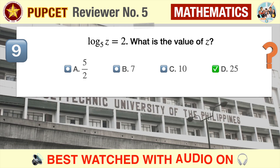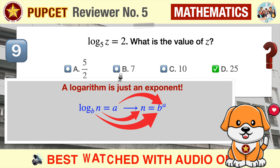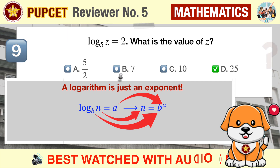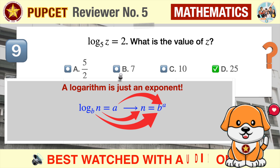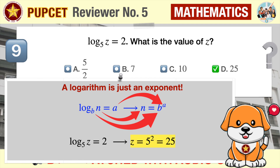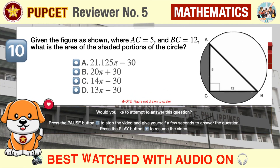The correct answer is D, 25. A logarithm is simply an exponent. Using the general form: log base b of n equals a is the same as n equals b raised to a. Going back to our equation, log base 5 of z equals 2 can be written in exponent form as z equals 5 raised to 2, therefore z equals 25. For a refresher on logarithms and exponents, watch our mathematics drills — the link is in the description below.